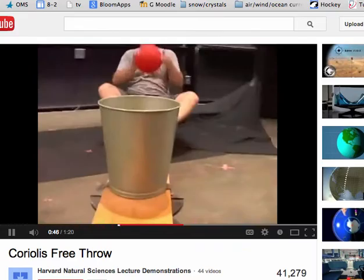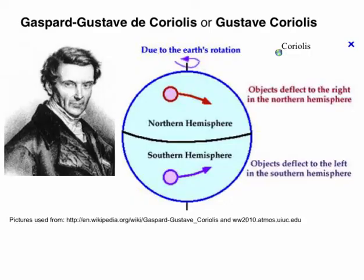Well, this was found out by this famous gentleman, who we just called Gustav Coriolis. And due to the Earth's rotation, objects deflect to the right in the northern hemisphere and the left in the southern hemisphere.